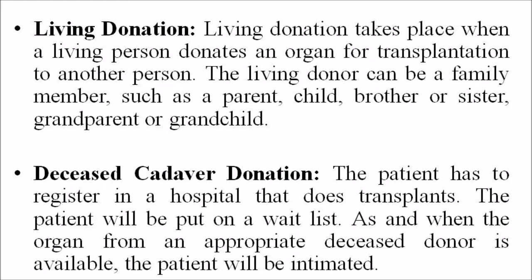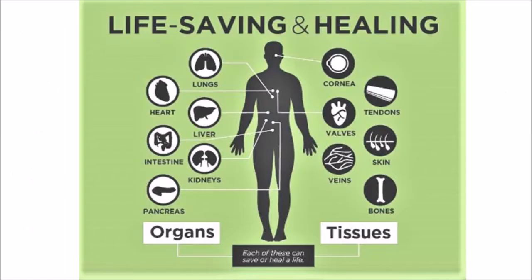The second type is deceased or cadaver donation. The patient has to register in a hospital that does transplants and will be put on a waiting list. As and when an organ from an appropriate deceased donor is available, the patient will be intimated. Organs that can be donated include kidneys, liver, pancreas, lungs, and heart, while tissues constitute eyes, skin, bone, bone marrow, nerves, and brain. Heart valves, eardrums, ear bone, and blood can also be donated.